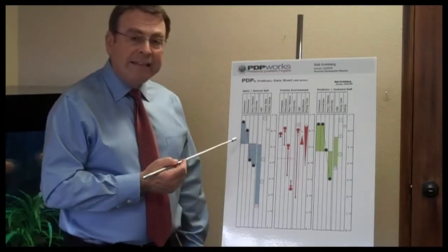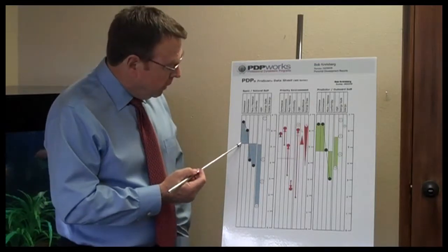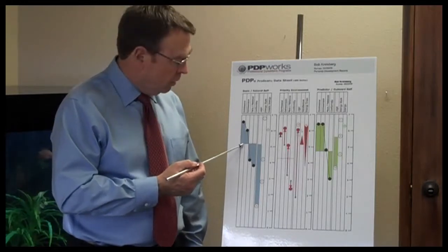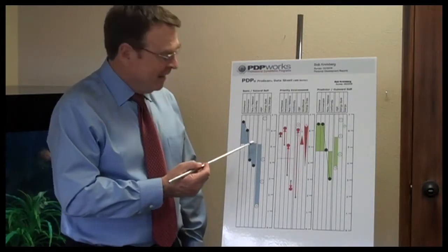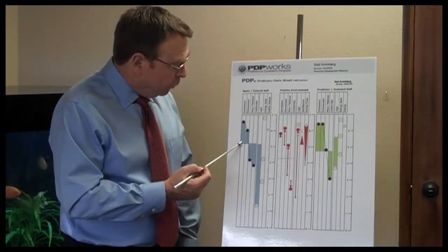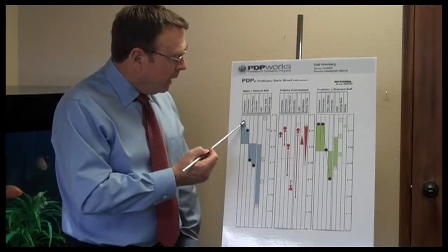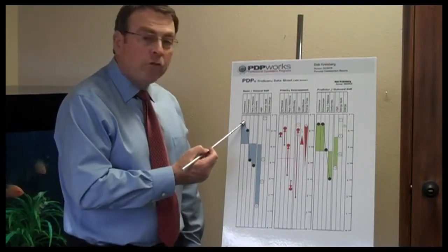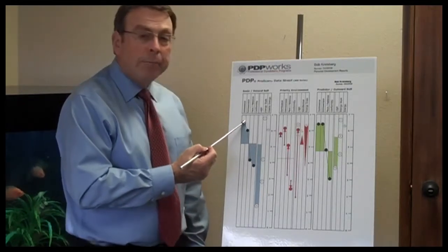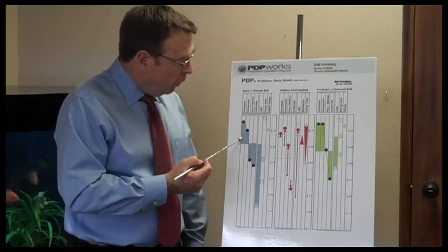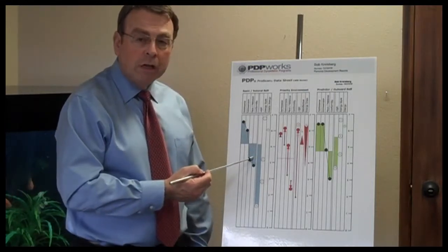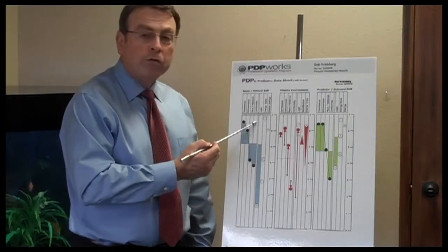Third is trait intensity. You can see here is the norm line — and by the way, this is my data sheet, so I know it pretty well. The delta between the norm line and my highest trait shows my trait intensity. It could be here, or here; mine happens to be all the way up here. So it's trait intensity, trait pairs, and trait positioning. Those are the four cornerstone traits.